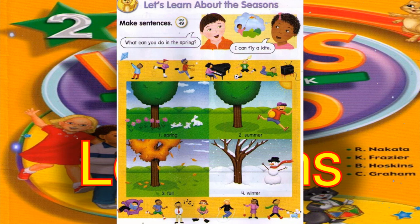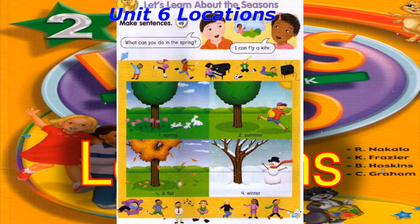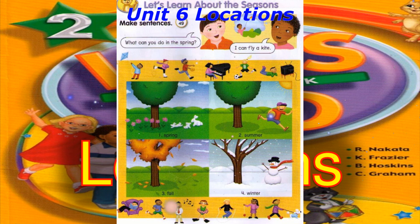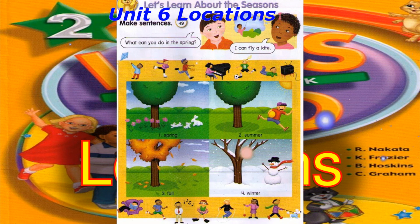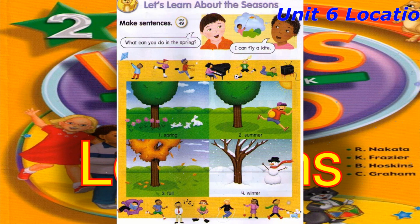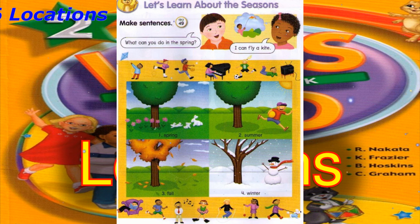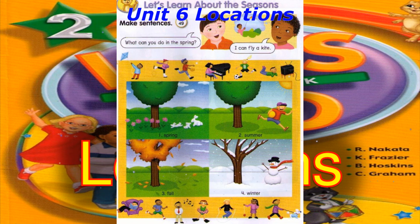Track 49. Let's learn about the seasons. Make sentences. What can you do in the spring? I can fly a kite. Number 2: What can you do in the summer? I can go swimming. Number 3: What can you do in the fall? I can play baseball. Number 4: What can you do in the winter? I can ice skate.